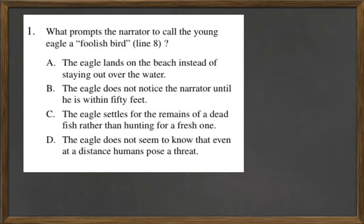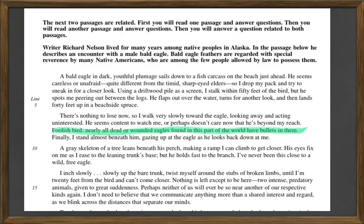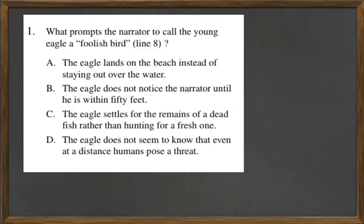That's not correct because when he sneaks up on the bird, it goes up and flaps out over the water, turns for no other look, and then lands 40 feet up in a beachside spruce. It was on the beach, but then it ends up landing up in a tree. So it cannot be number 1A.